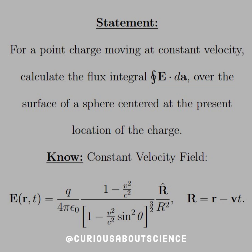So the statement is: for a point charge moving at constant velocity, calculate the flux integral of E dot dA over the surface of a sphere centered at the present location of the charge. The field for a constant velocity — as we kind of saw earlier — is Q over 4π ε₀, times (1 − V²/C²), with that factor of (1 − V²/C²) sine squared in the denominator to the 3/2, and then R-hat divided by R squared. R here is the displacement from the charge's position.